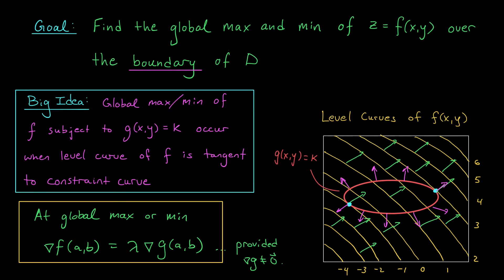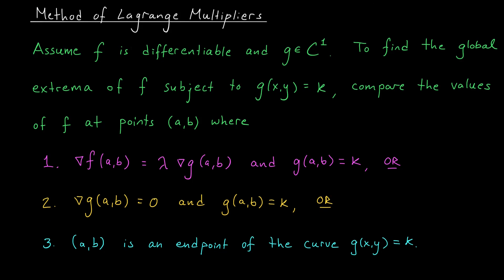I'm going to wrap up this video on the next slide by giving you the precise statement of the method of Lagrange multipliers, and you can compare with what we've just discussed. Okay, here's your summary. If we're trying to optimize a differentiable function f subject to some constraint g(x,y) equals k, where here g is C1,